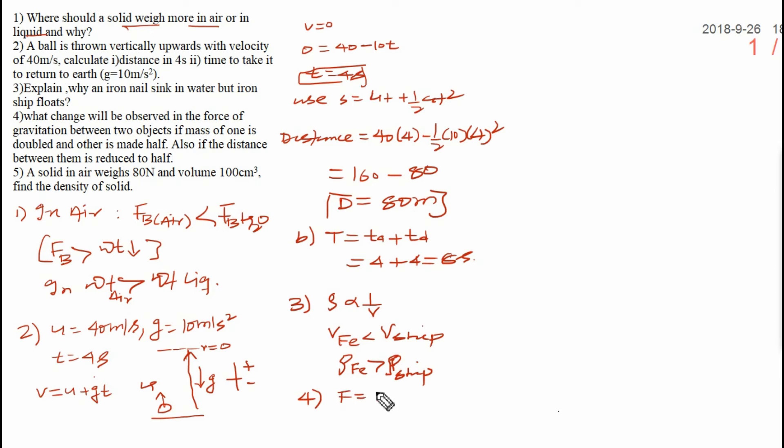That's why density of iron is greater than density of ship. That's why it will sink. Now question number 4. What change will be observed when force of gravitation? Force of gravitation you know that is G M1 M2 upon R square. Now according to question, mass is one, mass is twice M1, another mass is half M2 by 2, and distance between them is also half, that is R by 2 whole square. When you solve it, that will be 2, 2 will cancel out here. And 2 square is 4, 4 will come up. It will be G M1 M2 upon R square. And this is F naught. Then new force will be fourth time of F naught.